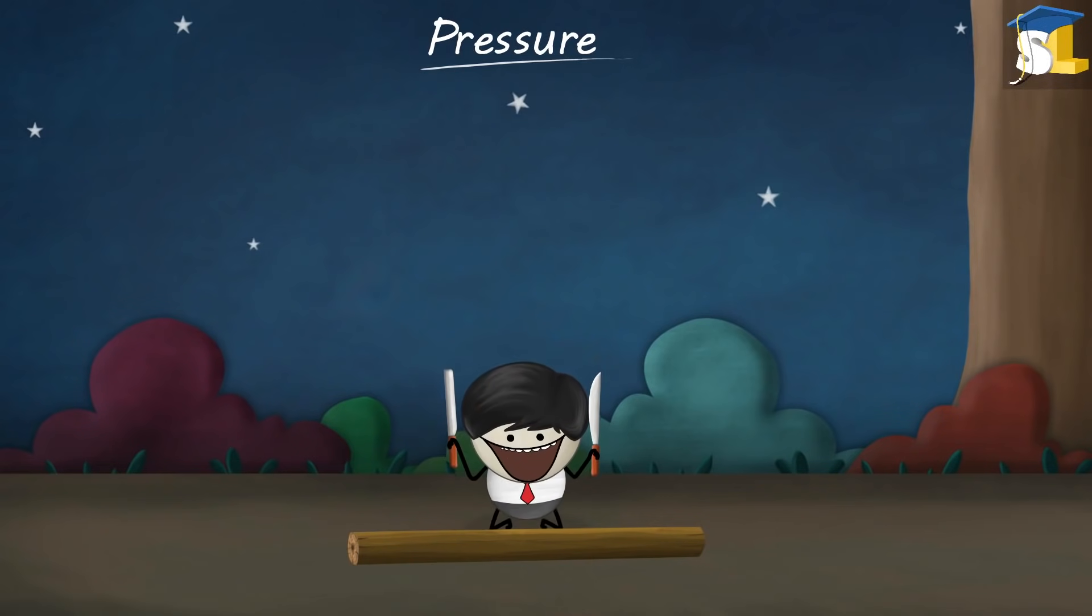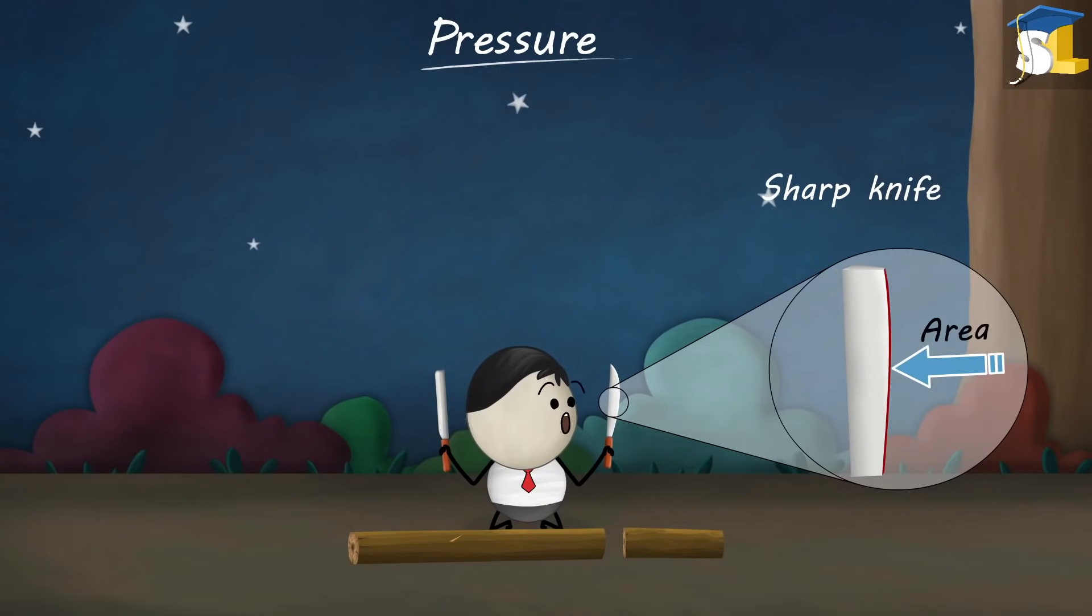Now, we apply the same amount of force on both the knives. Then, why was the result different? This is because the area on which the force acted was different.